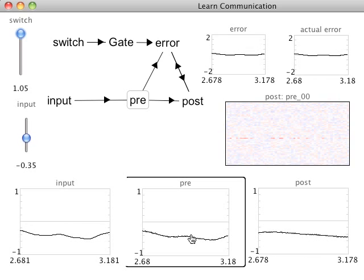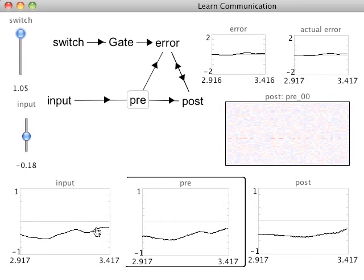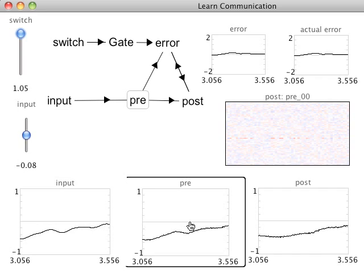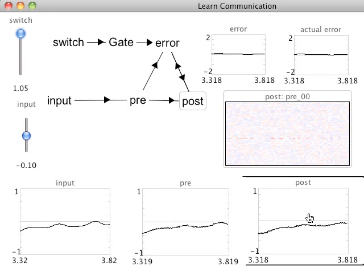As time passes, the error signal decreases, and the input, which is reflected in the pre-synaptic population, is now also being better reflected in the post-synaptic population.